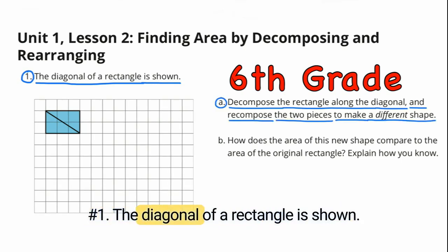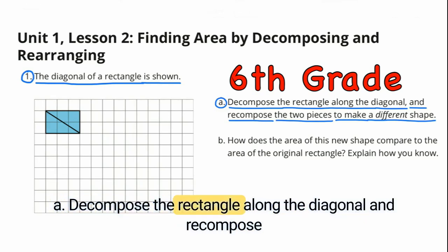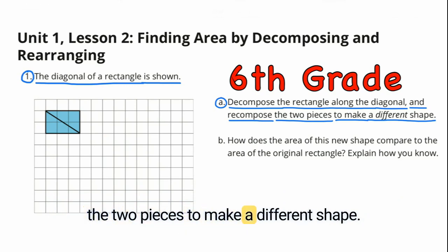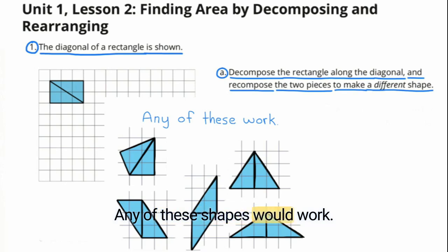Number 1. The diagonal of a rectangle is shown. A. Decompose the rectangle along the diagonal and recompose the two pieces to make a different shape. Any of these shapes would work.